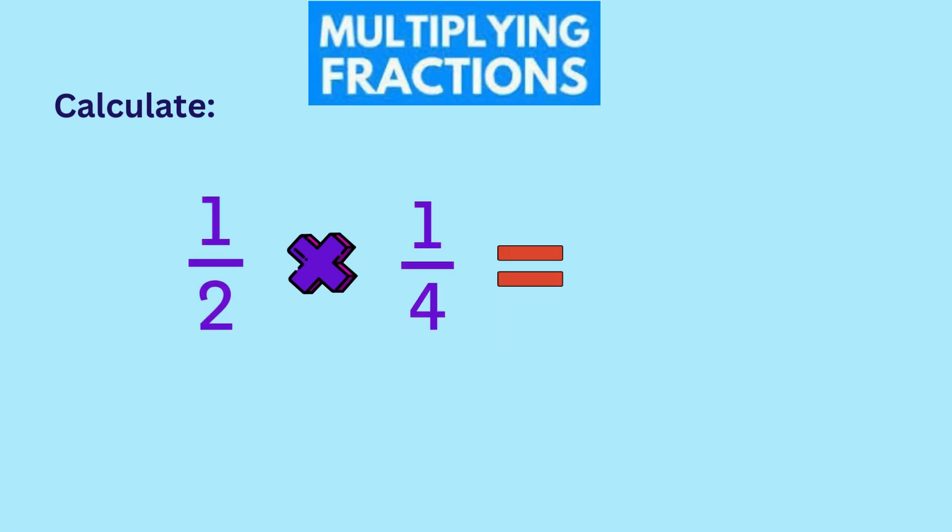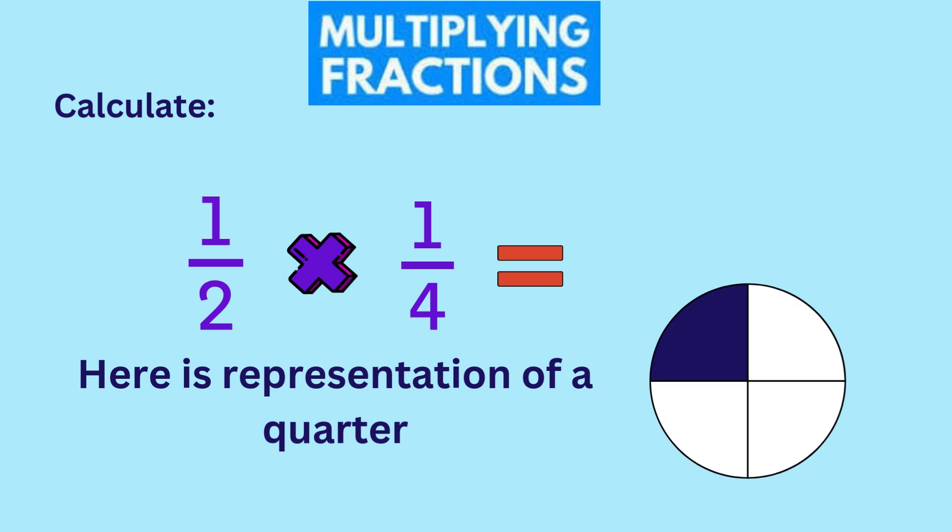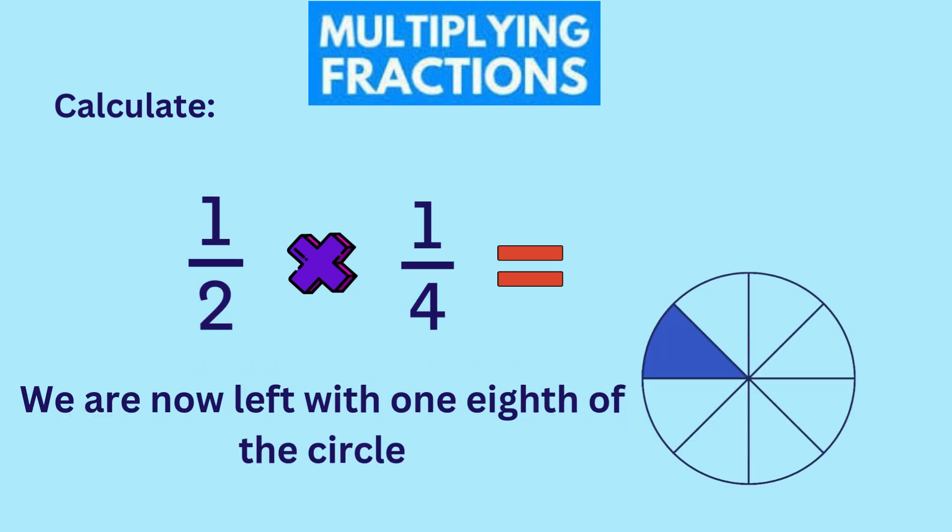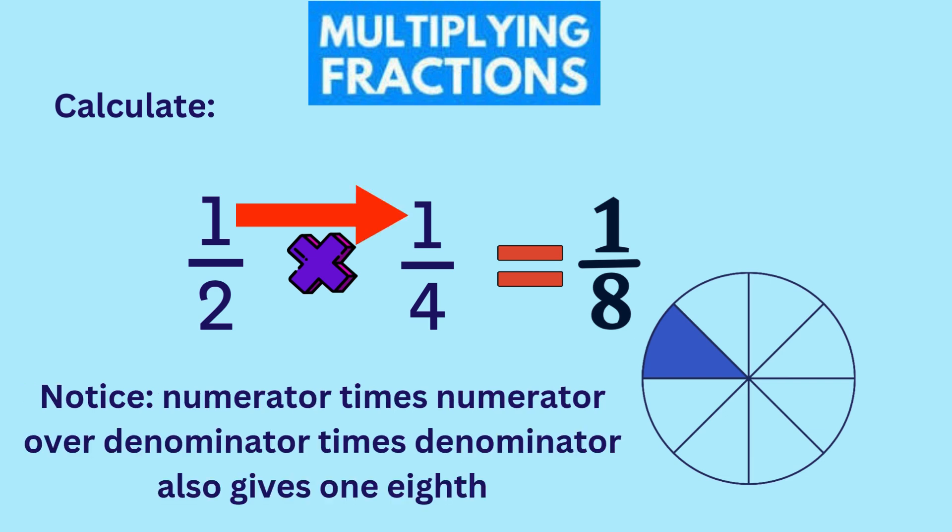Also try one half times a quarter. Again, here is a quarter of a circle shaded. One half times a quarter means that we will be taking half of the shaded area. As you can see, this leaves us with one-eighth of the circle. And so, one-half times one-quarter is one-eighth. Again, notice that to get the answer, we can simply multiply the two numerators and multiply the denominators, and we'll get one-eighth.